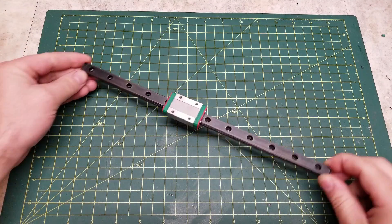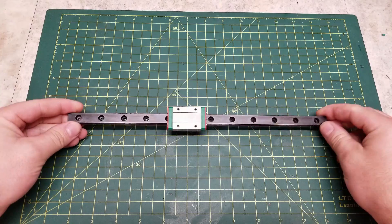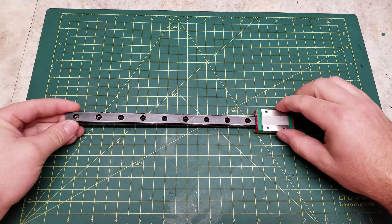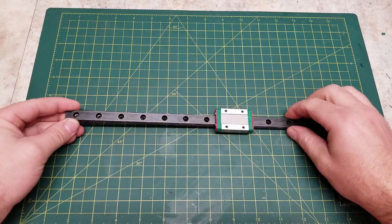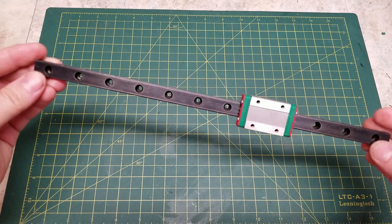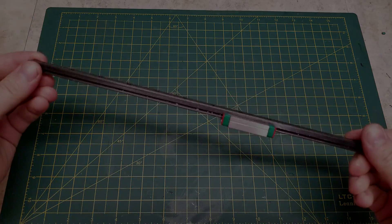Hello, in today's video I will be showing you how to cold blue your linear rails for your 3D printer at home simply and easily. This can be done to change the appearance of them and does provide some rust prevention as well.